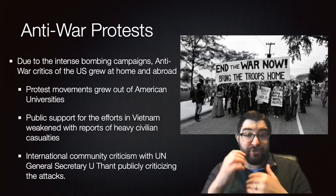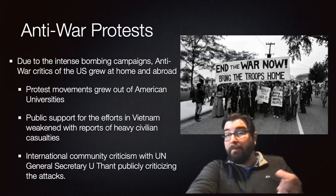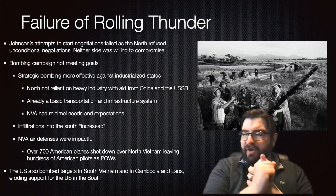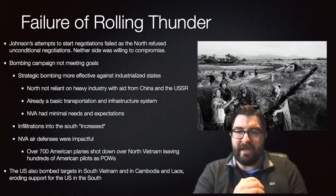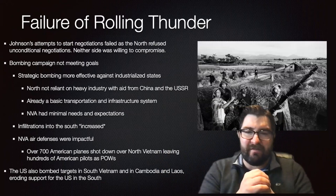The international community started to criticize the United States as UN General Secretary U Thant publicly criticized American bombing campaigns in Vietnam. Rolling Thunder is ultimately a failure — it doesn't meet its goals. Johnson's attempt to start negotiations failed as the North refused unconditional negotiations. Neither side was willing to compromise. The North wouldn't talk until the bombing stopped, and the Americans wouldn't stop the bombing until the infiltrations to the South had stopped.